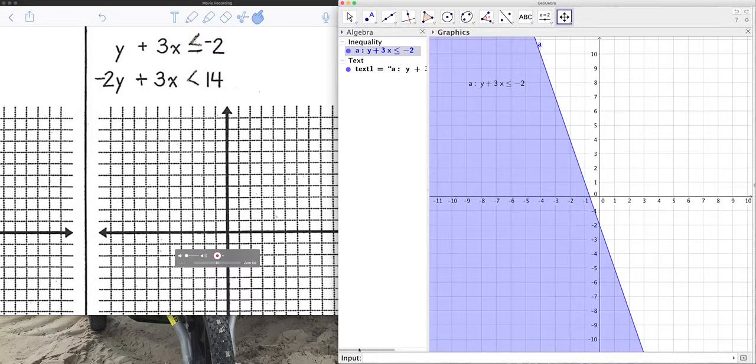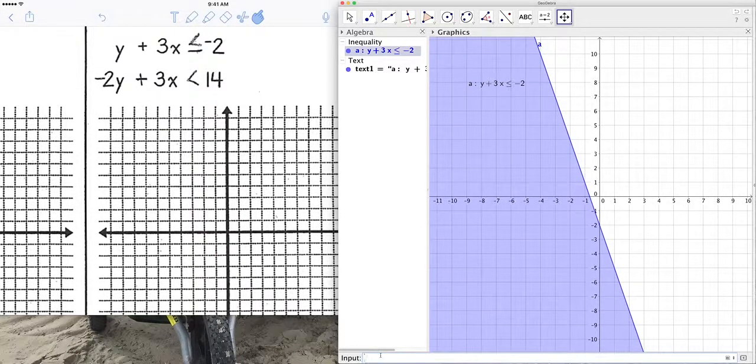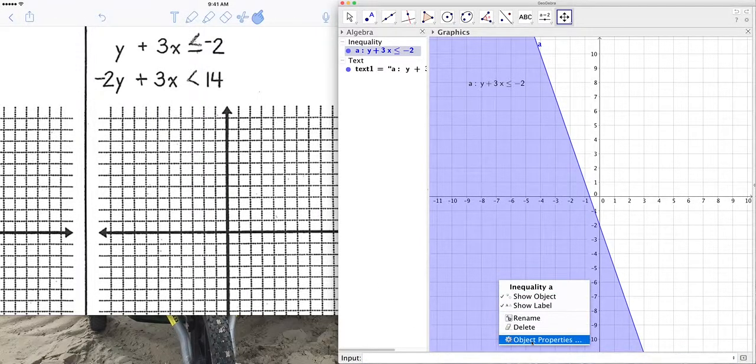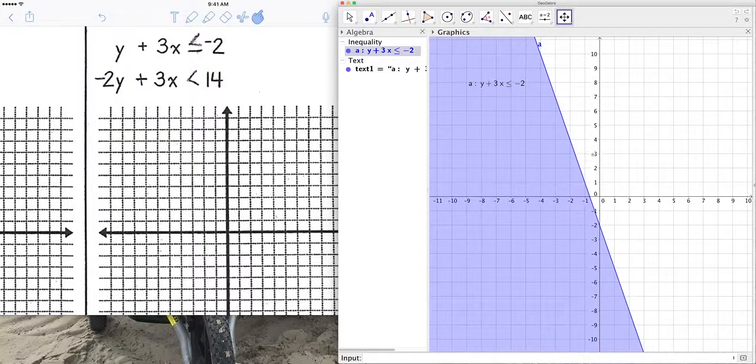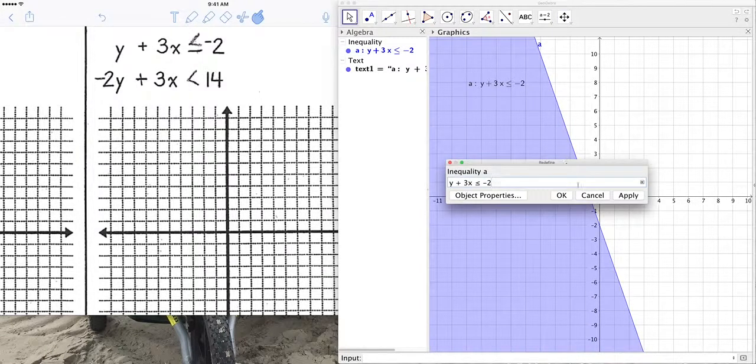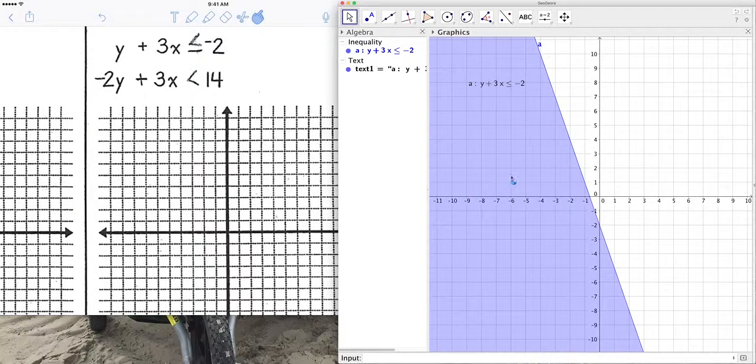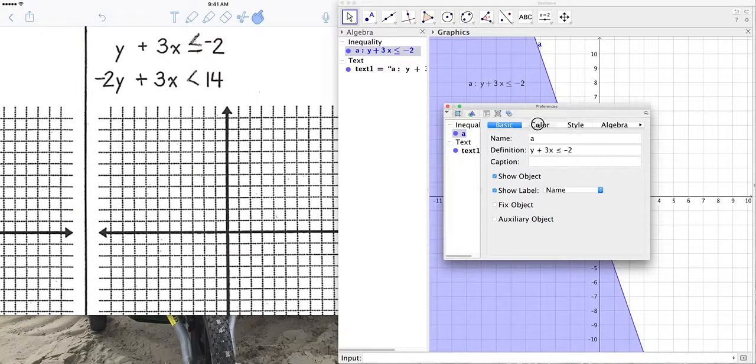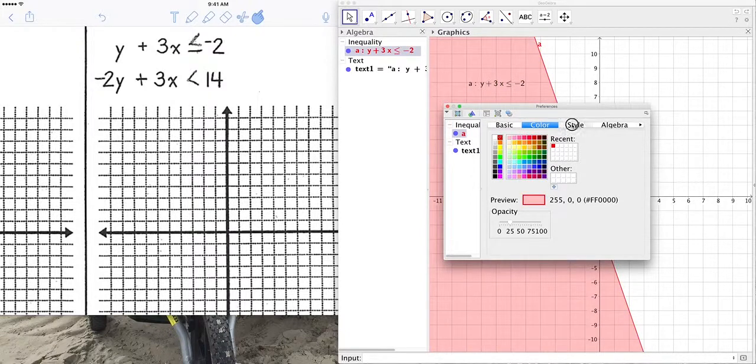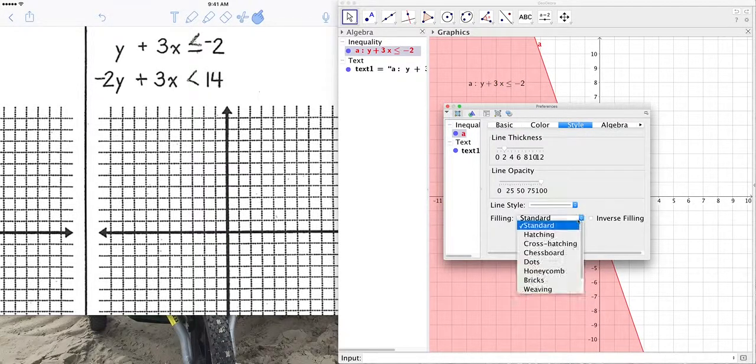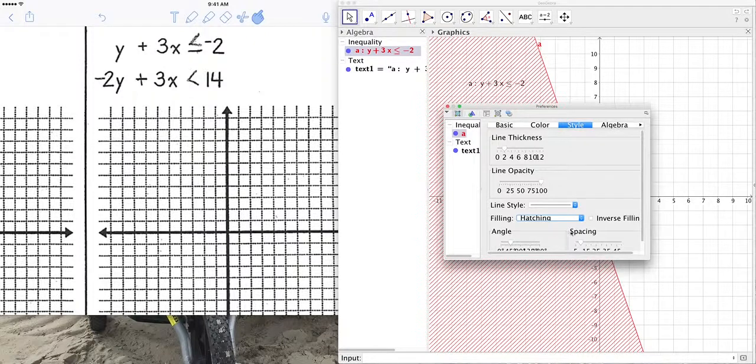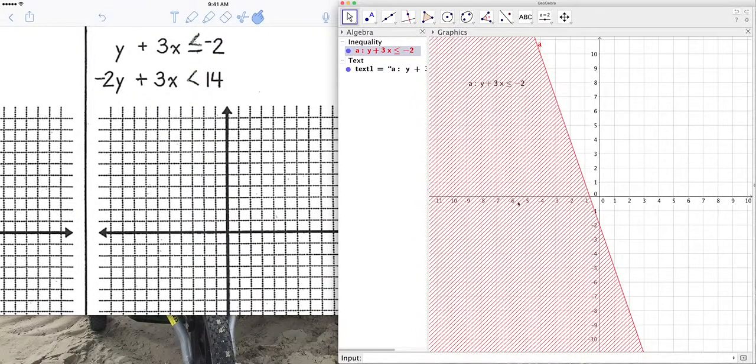Let's try again using GeoGebra. Now, I think I'm going to shade it differently. I'm going to click on this, and I think if I double click in the area, nope, it didn't work. If I right click, go object properties, I can change the color. I'm going to go color, I'm going to change it to red, and I'm going to go style. Instead of standard fill, I'm going to go hatching. See that?